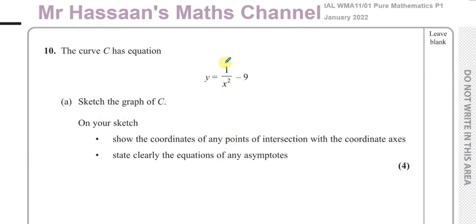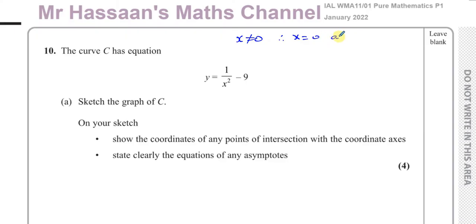This is a type of curve called a reciprocal curve because x is in the denominator. Certain values of x cannot go into this equation because it will cause it to be undefined. Whenever the denominator becomes 0, the expression is undefined. So x cannot equal 0, which means x equals 0 is going to be an asymptote.